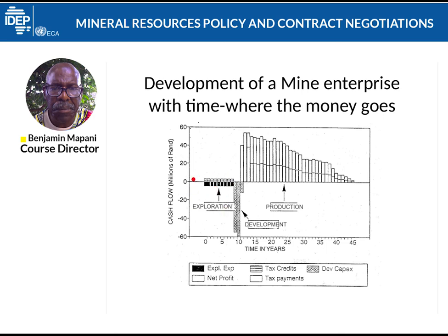Once exploration has been successful and you find a mineral deposit, you go into the development phase. This is when you start building the infrastructure of the mine. In the exploration phase you have identified how much resources you have and how long they will last, and at what average price — looking at the past history of how that metal has fared. You then develop the metallurgical processing plant and the mining infrastructure, and then you start producing.